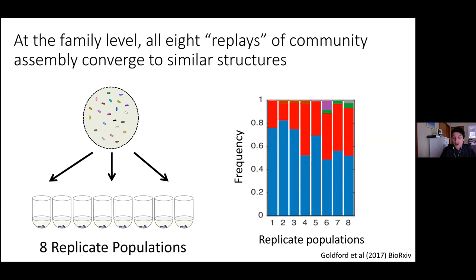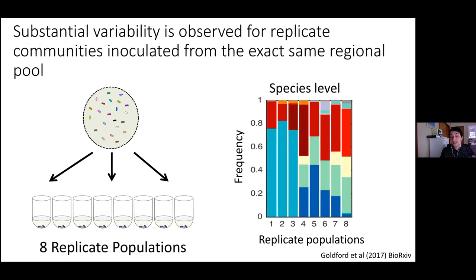One of the main findings is that even in these very simple habitats we find family-level convergence. If you repeat the same experiment from the same inoculum in eight replicate habitats — or many more, as I showed yesterday and will show today — at the family level of taxonomy there is substantial convergence. All habitats contain very similar fractions of the same two dominant families, yet at the species level there is substantial variation from community to community despite doing the same experiment multiple times.